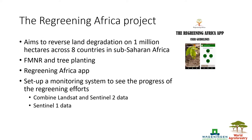We are also exploring use of the algorithm in the Regreening Africa context, setting up a monitoring system to see the progress of regreening efforts — where it works, where not, and what lessons can be learned. This is done in combination with the Regreening Africa app where local people can upload their data. Especially with plantations and natural regeneration, forest regrowth is slow and plants are often small, making it very challenging to monitor. Therefore we are now exploring the use of Sentinel-2 optical data and Sentinel-1 data.